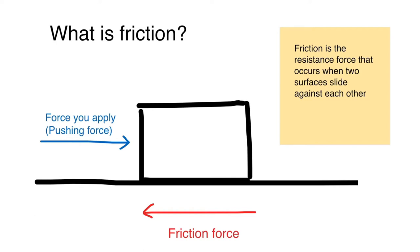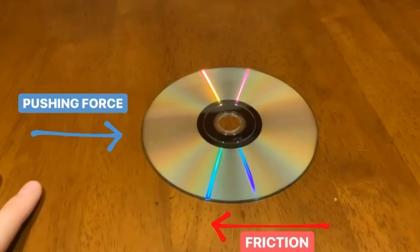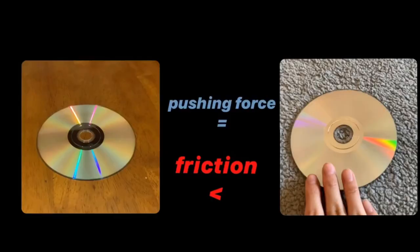In this case, when you slide the regular CD on the table, the friction force goes against the way you slide it, causing it to stop. Sliding on a rougher surface, like a carpet, would also increase the friction force, causing it to stop faster.